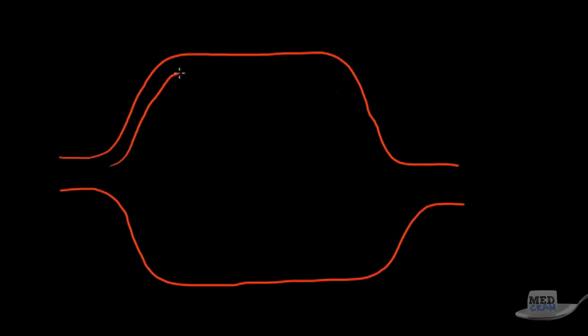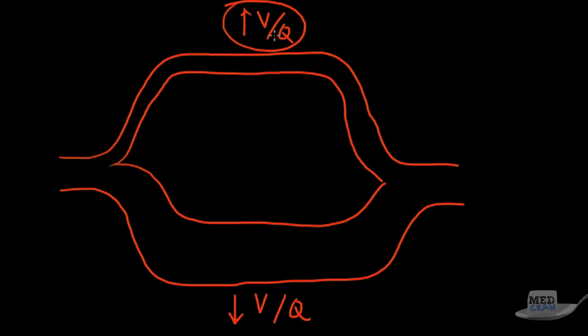I'm going to draw a diagram that we had when we talked about shunt but it's not shunt. These are two options that the blood can go through and these represent two different areas of the lung. The top part is going to represent an area where we have high VQ and the lower area is going to represent where we have low VQ.